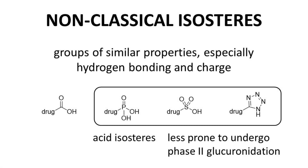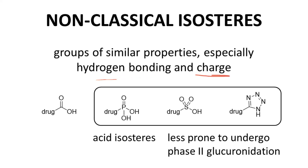Another type of isostere includes the non-classical isosteres, sometimes called bio-isosteres. These are functional groups that may not be so similar in size or shape, but duplicate each other's hydrogen bonding and charge properties.